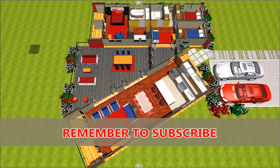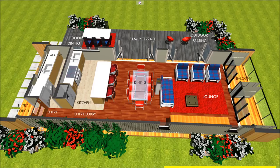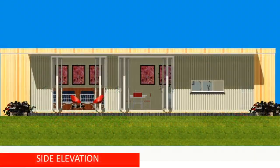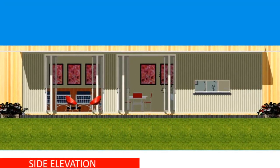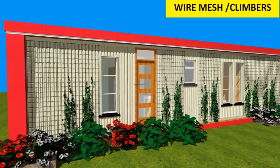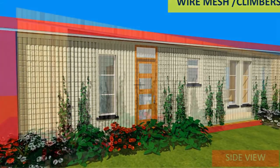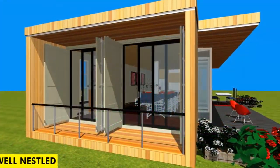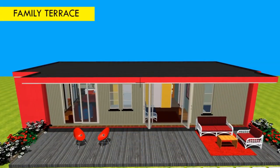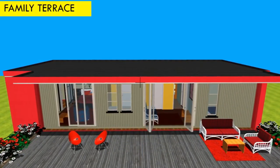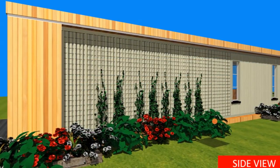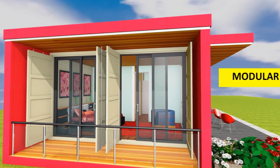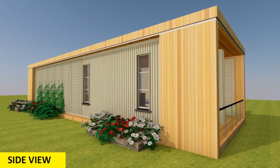Foundation design: before the container modules are delivered on site, it is advisable to have an appropriate foundation ready for your new build. Use a raised foundation to elevate the containers away from moisture. The elevated position also provides the height necessary to construct a deck, depending on the choice of foundation used. In this house design, we've used a raft foundation, sometimes called a slab foundation. You are encouraged to watch our previous presentation on five foundation types used on shipping container houses for more understanding.